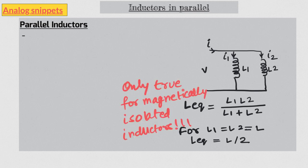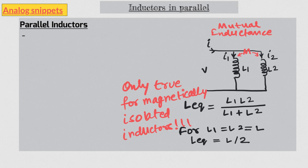Magnetically isolated inductors are inductors living in two different worlds. In the same world, inductors have so-called mutual inductance between them. And in the presence of mutual inductance, this equation becomes more complicated.